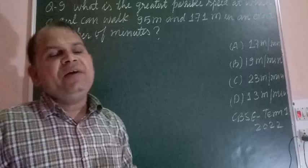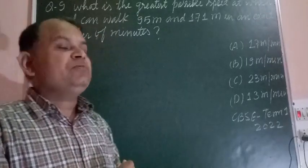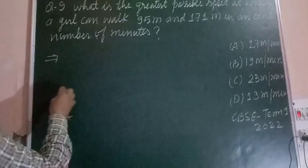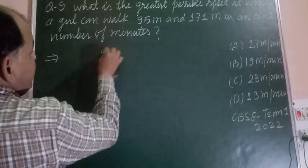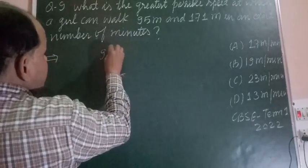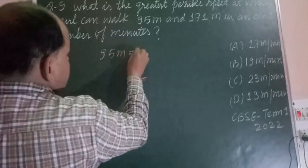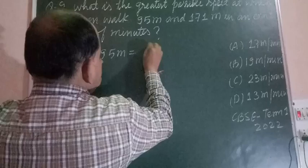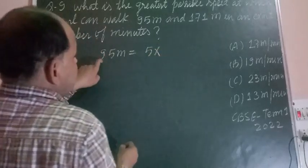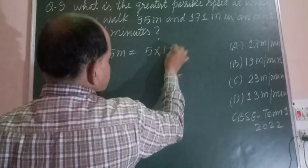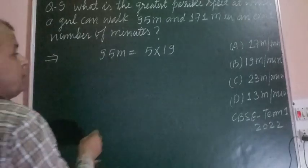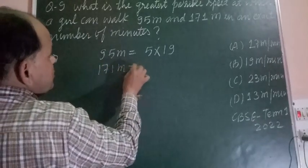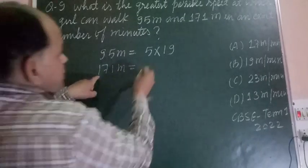The question asks for the maximum speed to cover 95 meters or 171 meters. So here, for 95 meters, we make its factors: 5 times 19 equals 95. And for 171 meters...